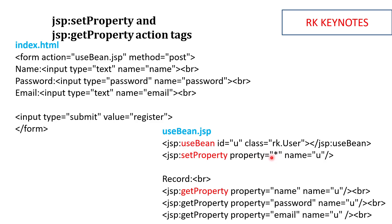After the useBean tag I use setProperty with property equal to star, which means it refers to all the properties. The name used is 'u', so it sets all properties. The three values accepted from the user are name, password, and email. Once those are set to the class, I use jsp:getProperty to retrieve them, specifying the property name and the useBean name 'u', to print all the property information.